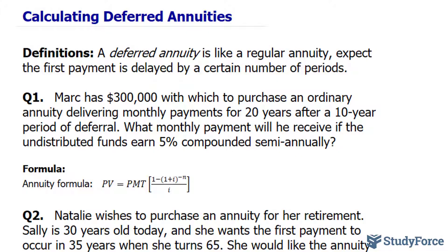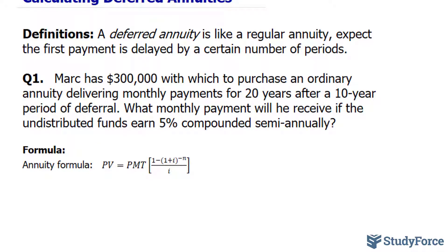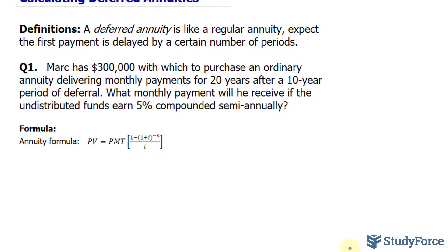To answer these questions successfully, it really helps to create a timeline of what's happening. He won't be getting any payments for 10 years from now. So right now, the money is worth $300,000.